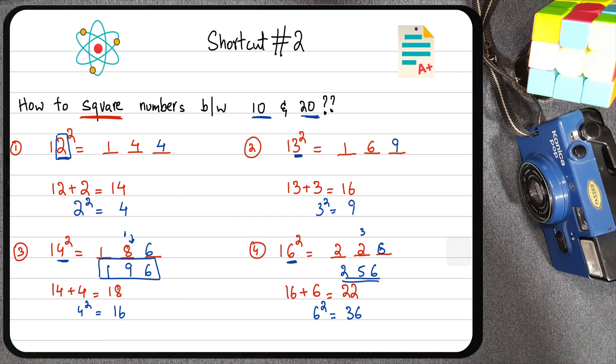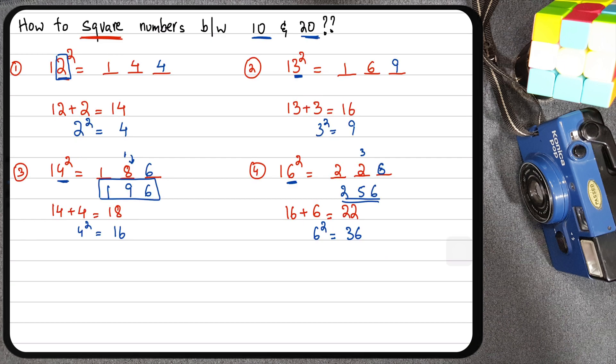So this is how you can square numbers between 10 and 20. And as we did in the last video, I want you to find out the square of 17 using this trick, the square of 18 and the square of 19. And let me know, honestly, how long did it take you to work out the square of these three values? So that's all for this video. If you liked it, make sure you give it a thumbs up and do subscribe to my channel in case you haven't. I'll see you guys in the coming videos with more interesting shortcuts. Until then, take care. Bye-bye.